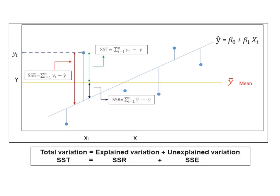The total variation consists of two components, which are regression sum of squares and error sum of squares. Mathematically, SST equals SSR plus SSE.